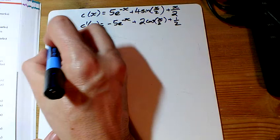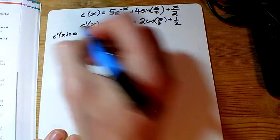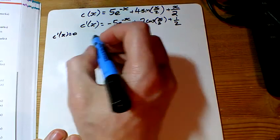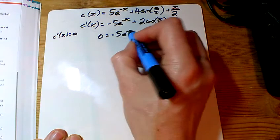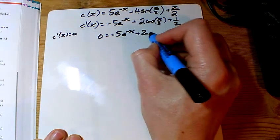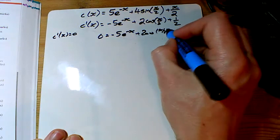And of course at the stationary point, I want this to equal 0. So if I put 0 equals all of this, and there's two different ways of rearranging it.